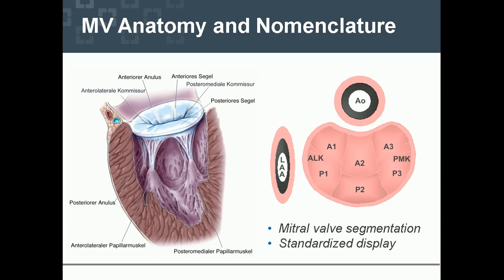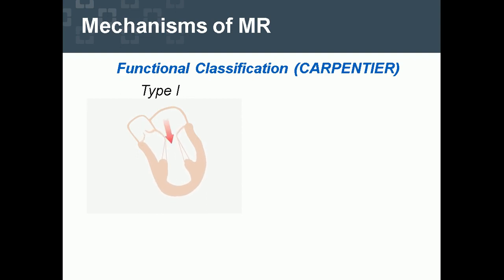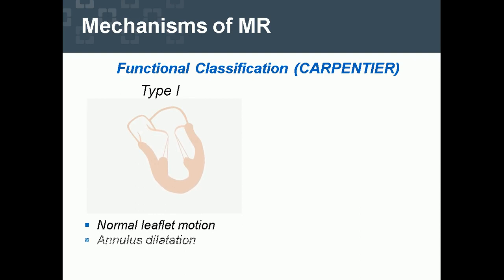Standardized display is key. The Carpentier scheme needs to be translated into echo views — 3D echo views, two-dimensional cut planes, and vice versa. Let's go through this systematically. Mechanisms of MR: functional classification Carpentier type 1 — normal leaflet motion, annulus dilatation.